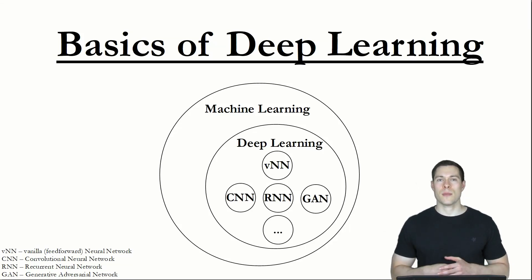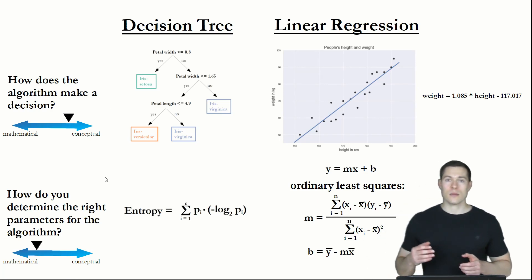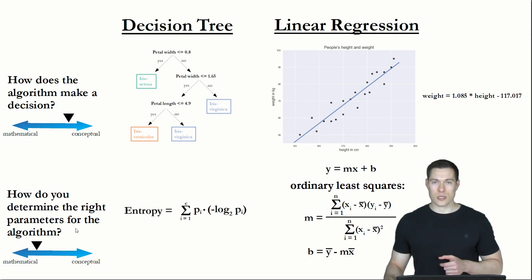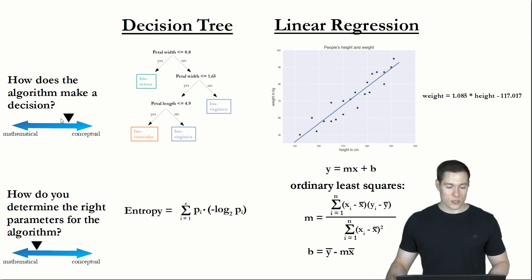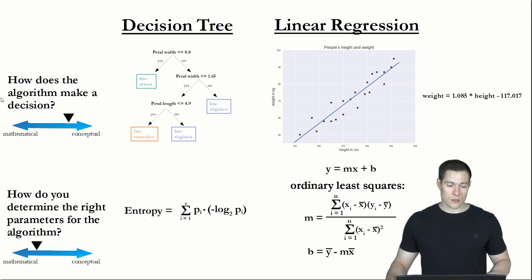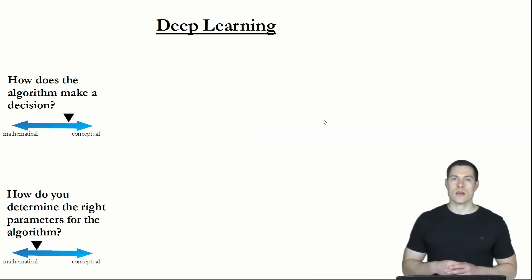Welcome to part two of the basics of deep learning series. In the previous video we saw that two important aspects to consider for any supervised machine learning algorithm are: how does the algorithm make a decision, and how do you determine the right parameters. Now in this video we are going to answer the first question for the deep learning algorithm — what's the conceptual idea behind deep learning?